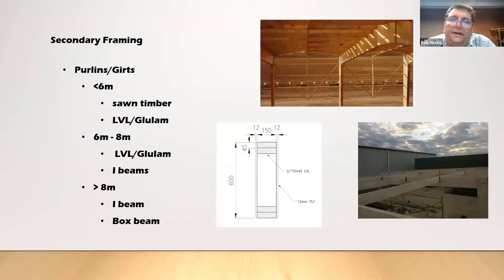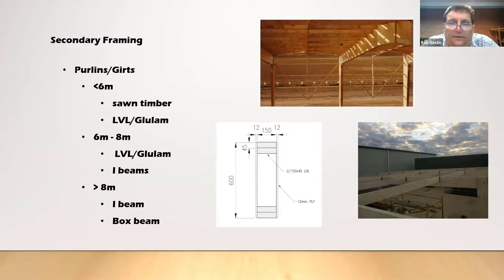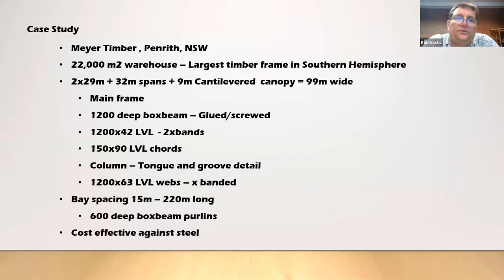For secondary framing: under 6 metres we can use sawn timber, LVL or glulam depending on appearance, or I-beams as shown at the top. For 6 to 8 metres, solid sections of LVL, glulam and I-beams are suitable. Greater than 8 metres, I-beams are more suitable with a good range available up to 450mm depth from a number of suppliers. Box beams can also be made — in the Myer Timber case study we used box beam purlins because we had to span 15 metres.